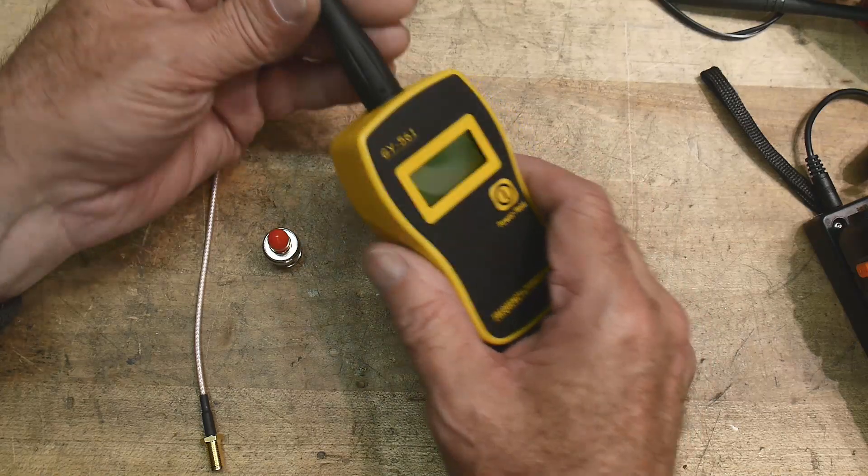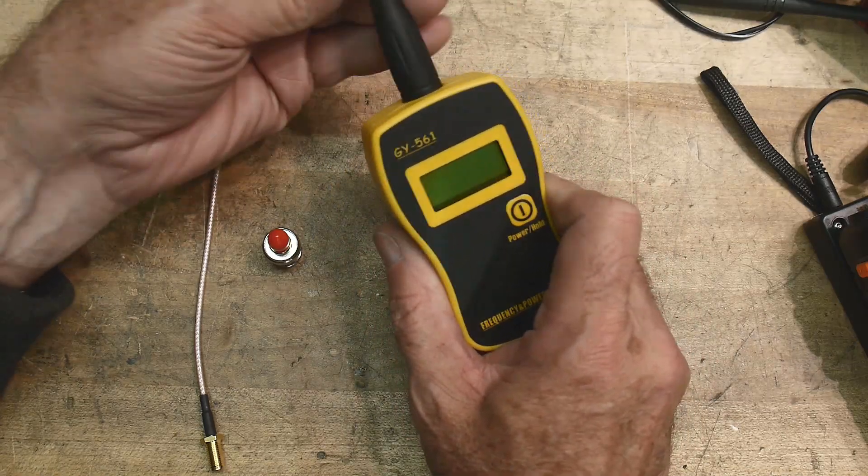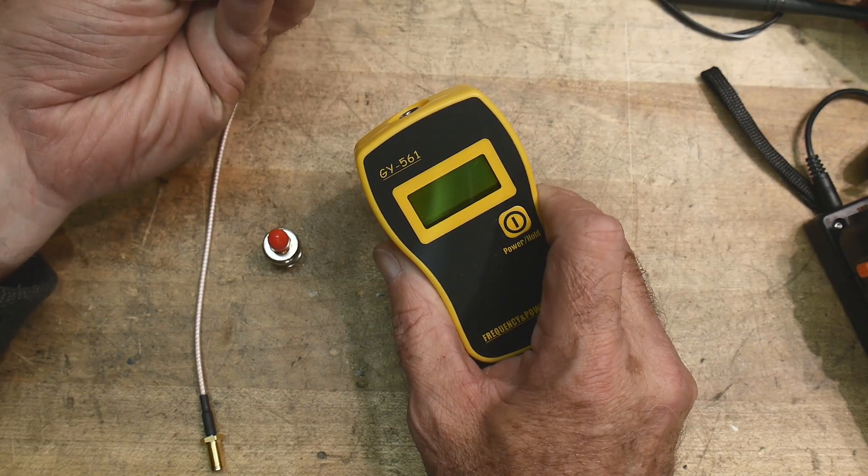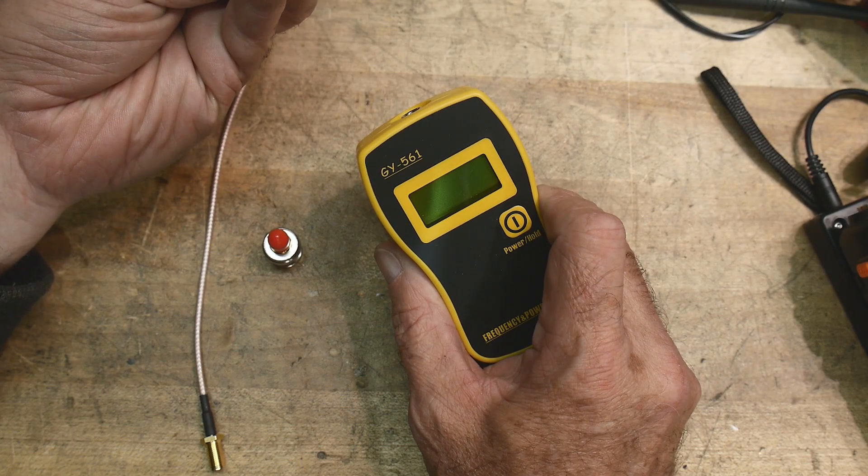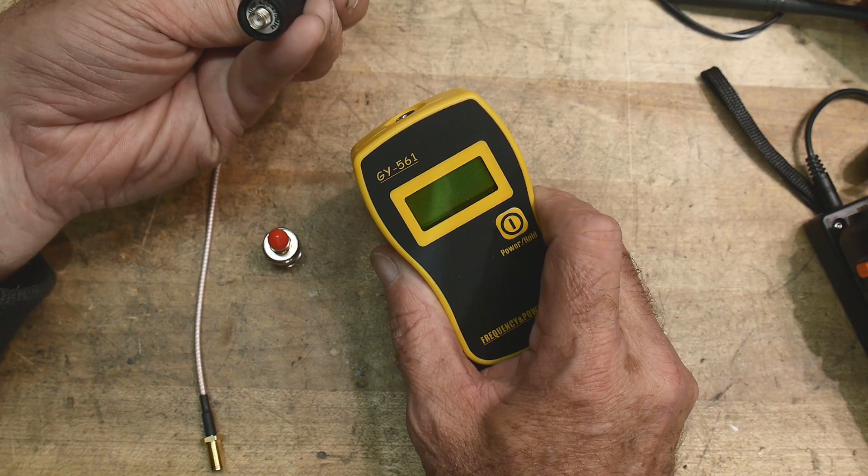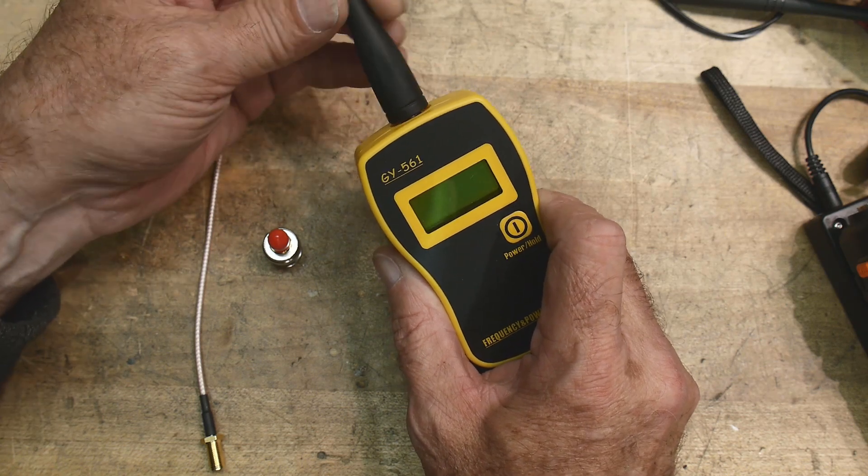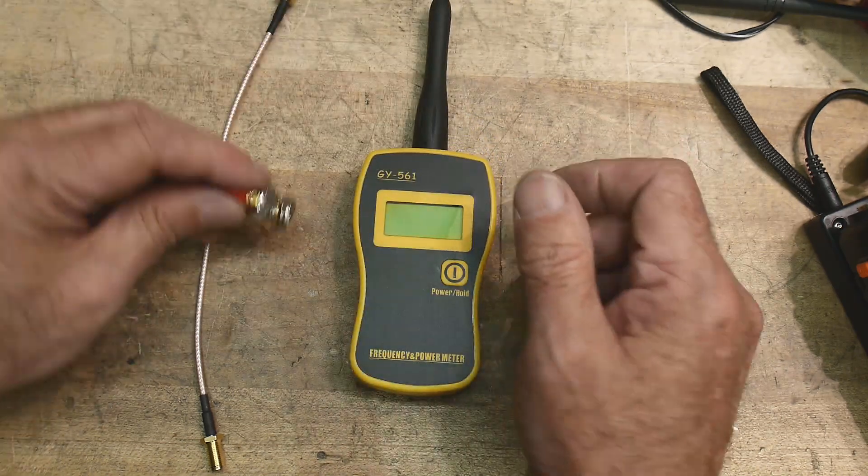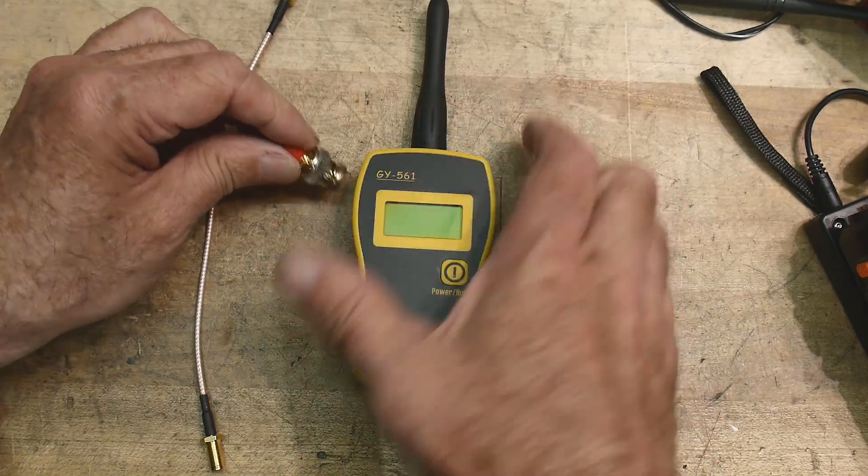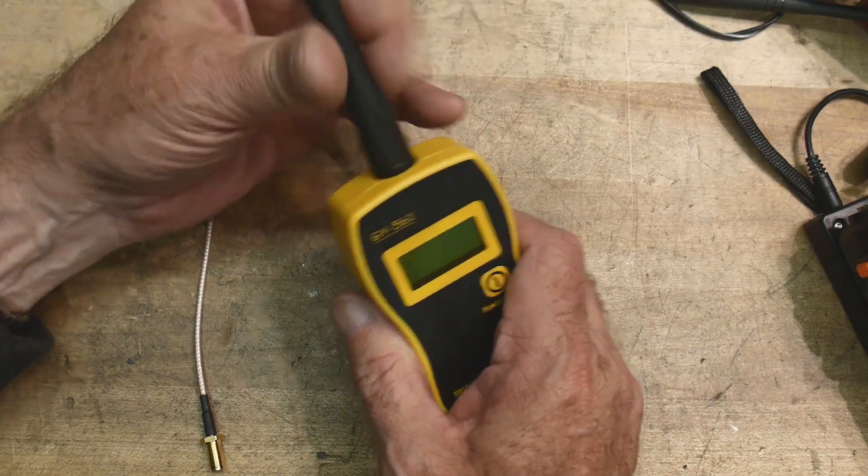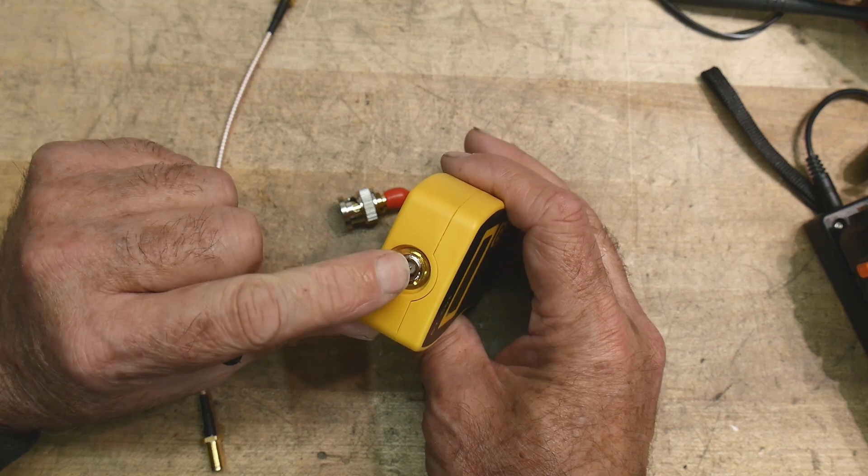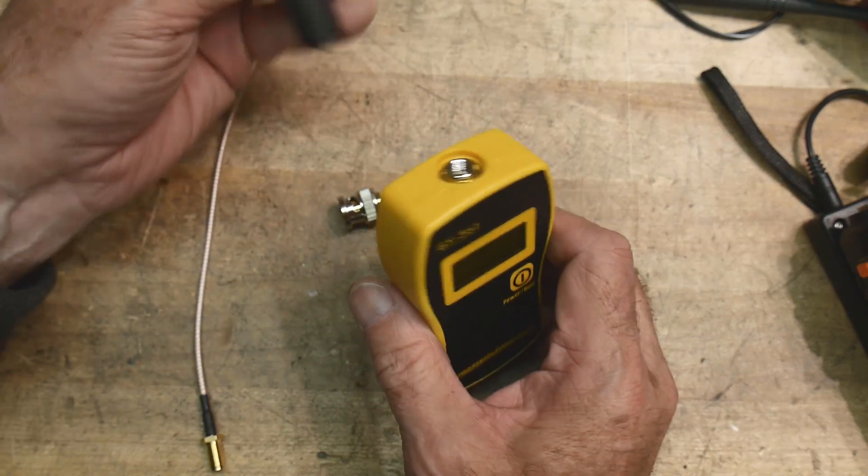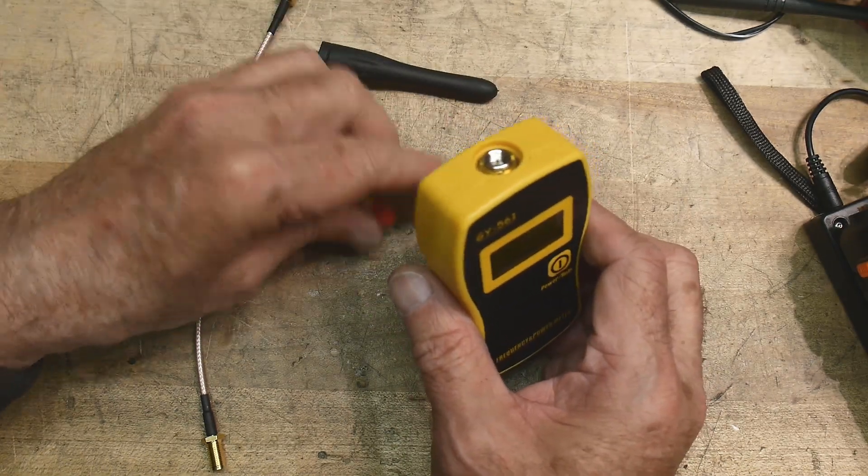So it comes with a little rubber duck antenna so you can get near a transmitter and measure the frequency. The little antenna says UHF 400 or 470 megahertz, so it's a 220. So it comes with a male SMA and you need to be able to get things into it with a male SMA if you want to measure power.